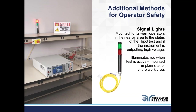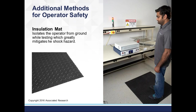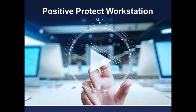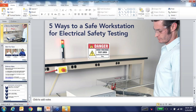Additional methods for operator safety include signal lights. Mounted lights warn operators nearby about the status of the Hypot test — green means the test has passed and you're good to walk by; red means the device is under test, don't walk by. We also have insulation mats: here we see an applications engineer standing on an insulation mat, isolating the operator from ground while testing, which greatly mitigates shock hazard — though it doesn't completely eliminate it, since touching both a grounded and a live instrument simultaneously would still cause a shock.